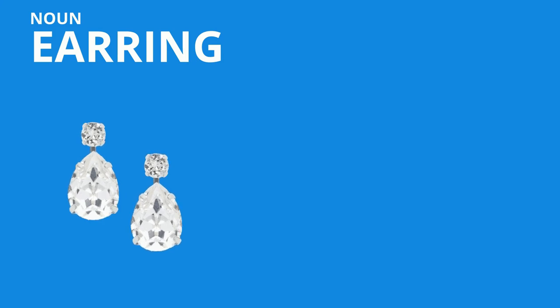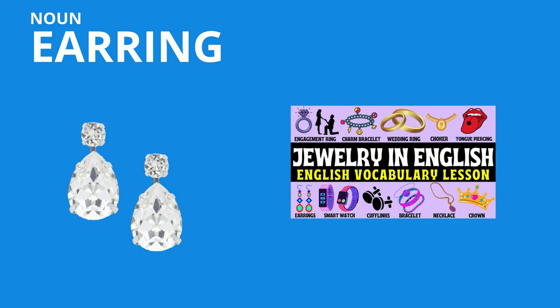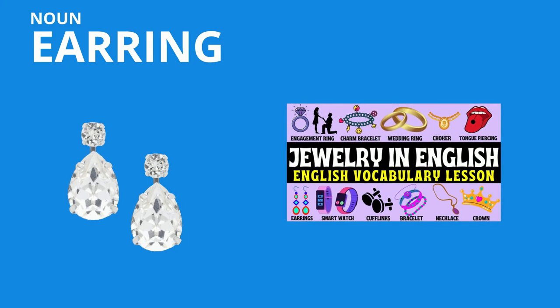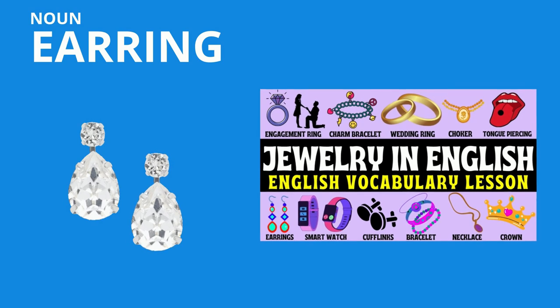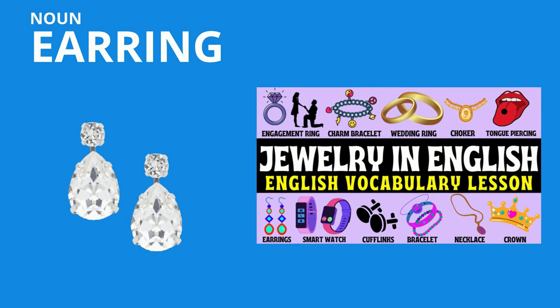Throughout the ages, ears have been adorned with lots of different types of jewellery. The most common type you'll find today is the earring. If you're looking for more English vocabulary on jewellery in general, the link for that video is on screen now, where you'll find tons of new English vocabulary relating to jewellery.